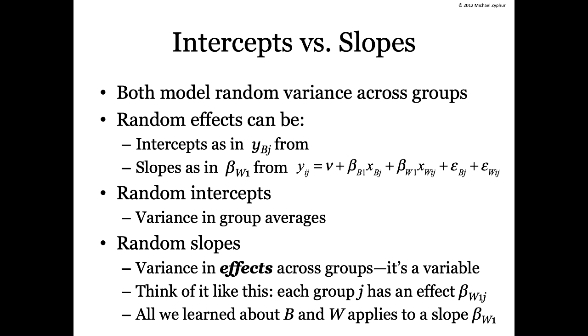And the way they talk about the between parts of variables, they call those random intercepts. Really all they meant by that was the between part - it's like the school mean for math achievement, that was the random intercept or the between part. Well, we can do more.